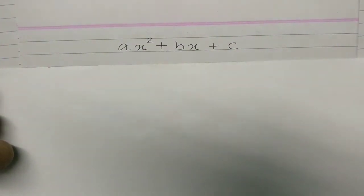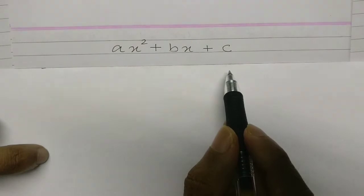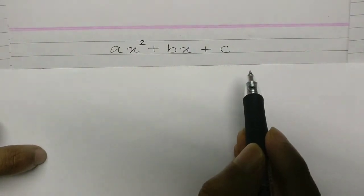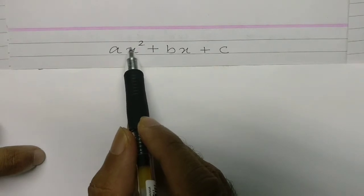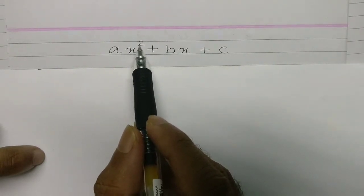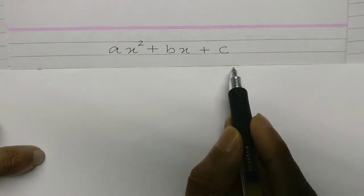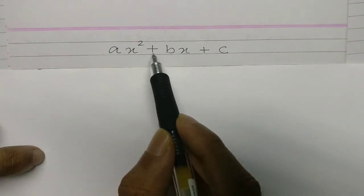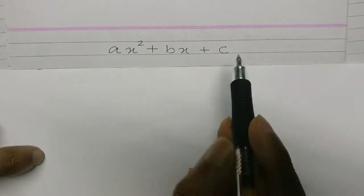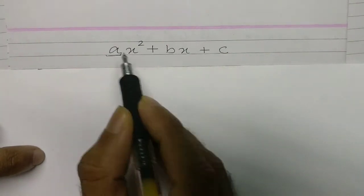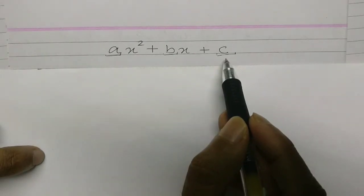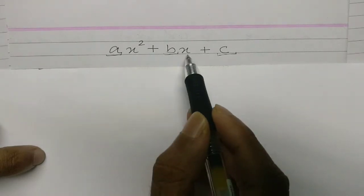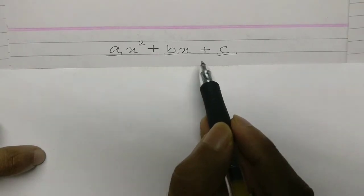Hey there, Joel here, and welcome to my channel Math World. We are going to discuss today the general form for a quadratic polynomial. Quadratic is when the degree of the polynomial is 2 — that's when we call it a quadratic polynomial. So the general form of the polynomial is ax² + bx + c, and we already know that the values of a, b, and c are the coefficients.